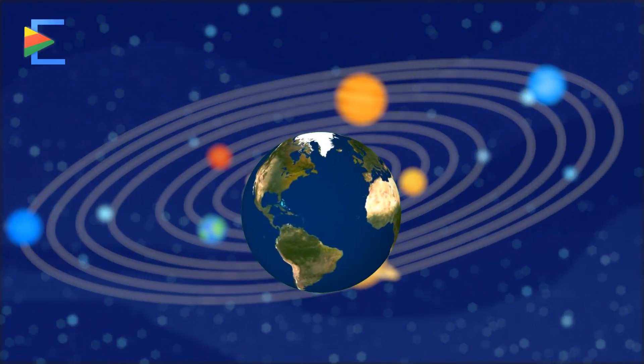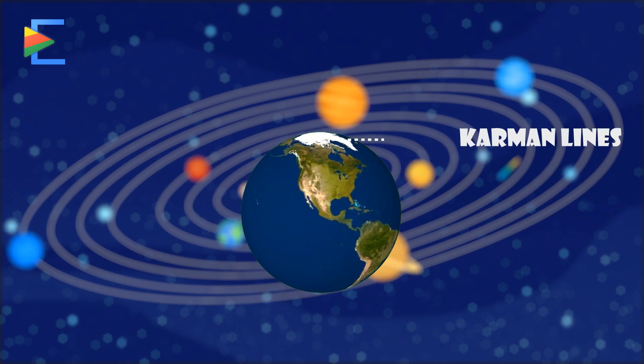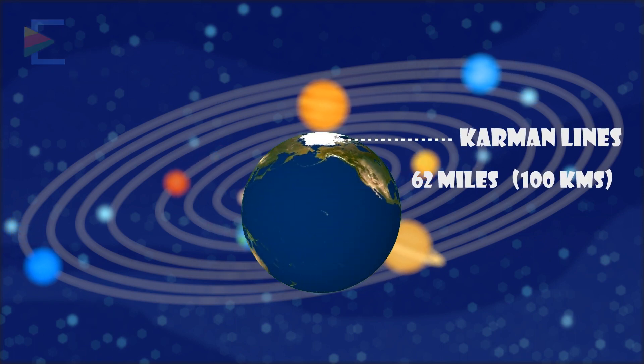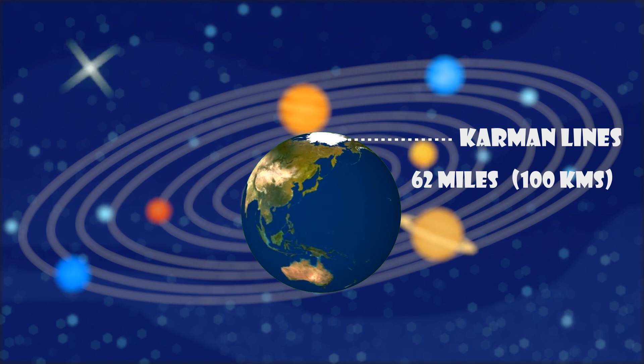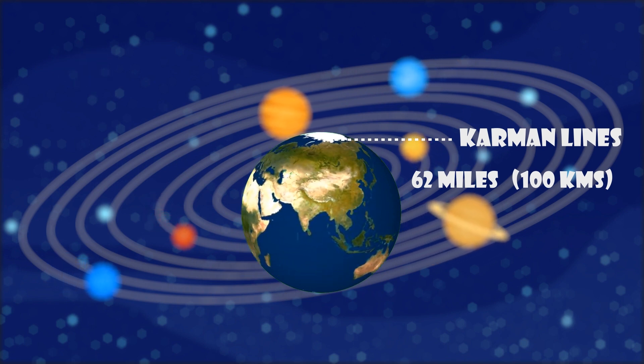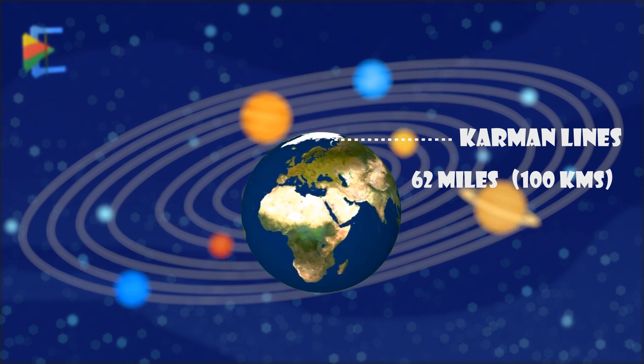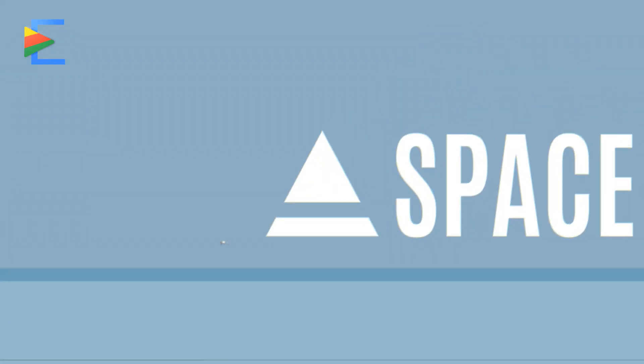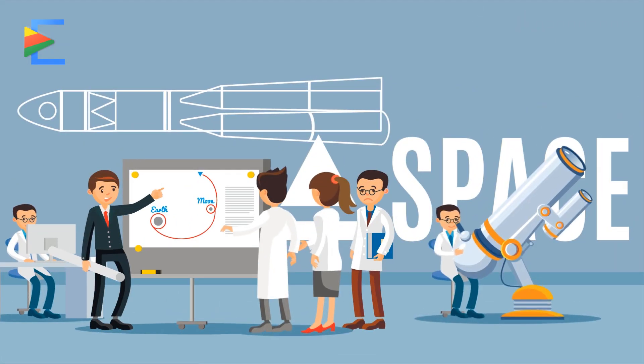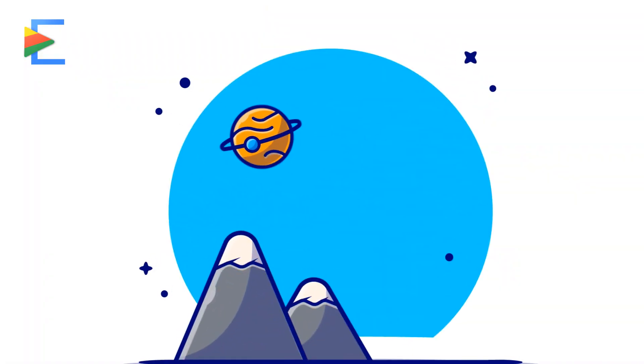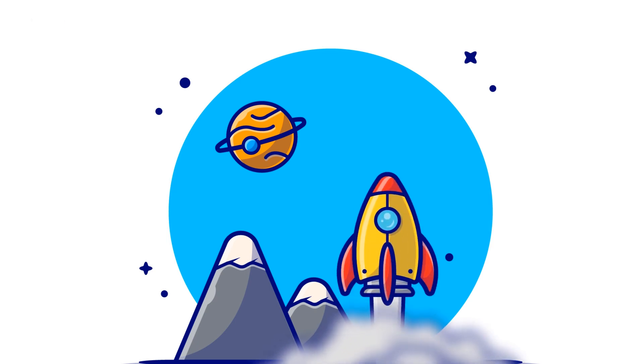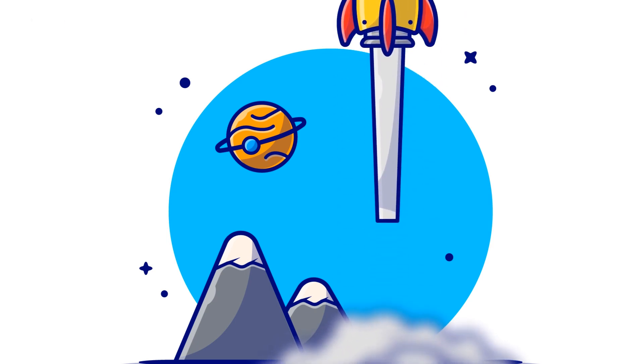Although there is no official solid boundary for where space begins, the Karman line sits at 62 miles above sea level and is conventionally used as the start of outer space in space treaties for aerospace records keeping. So we can say that outer space is only 62 miles away.